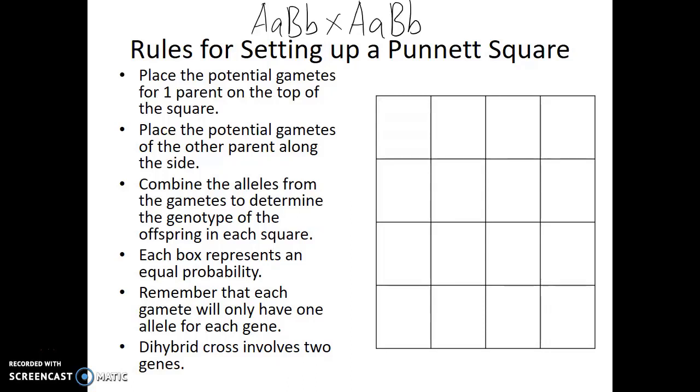The first thing we need to do is figure out which types of gametes this parent can produce. Keep in mind the gametes will always have one allele for each gene, meaning each gamete will have both an A allele and a B allele.